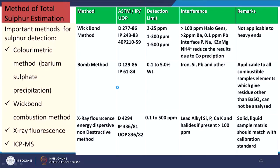Methods of sulphur determination include the colorimetric or barium sulphate method (also known as the Wichmann method), combustion method, X-ray fluorescence (XRF), and ICP-MS. Various ASTM test numbers, detection limits, and potential interferences for each method are noted.